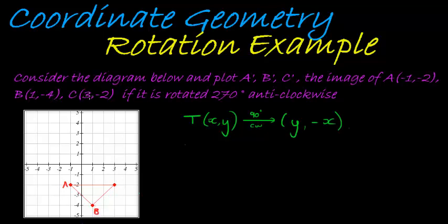And then we have C which is (3, -2), that makes that one C. Now I apply my transformation rule to all of my points.